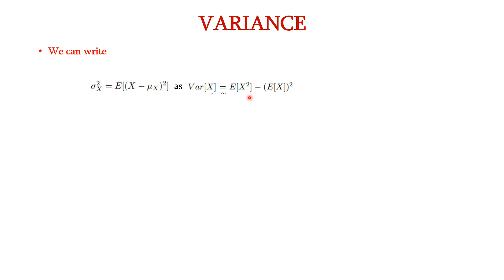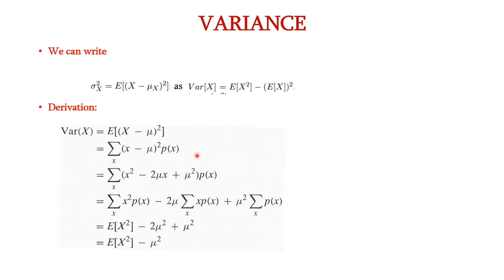Let us see how we can derive this formula. Consider variance of x is equal to E of x minus mu whole square. We can write this expectation in the form of summation: summation of x minus mu whole square into p of x. Expanding this formula we can write it as x squared minus 2 mu x plus mu squared into p of x. Taking summation for individual terms: summation of x squared into p of x minus 2 mu into x into p of x plus mu squared into summation of p of x. We can represent summation of x squared into p of x as E of x squared.